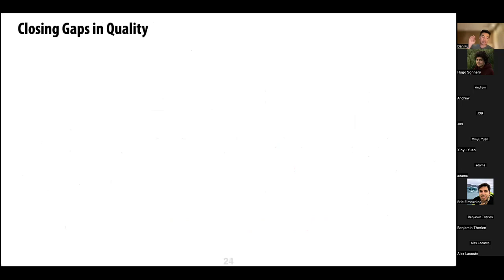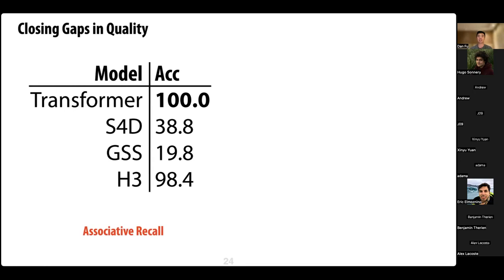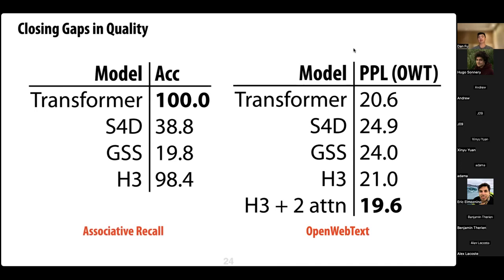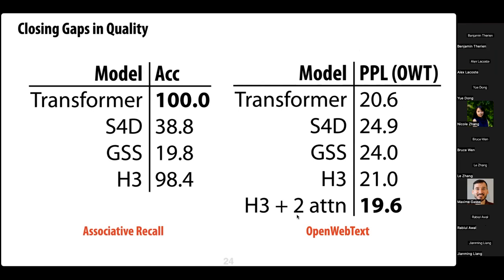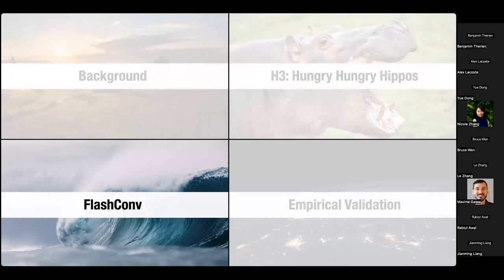We can write out weights that do this, but the key question is whether H3 learns it from scratch. It turns out yes — H3 basically closes the gap with transformers on the associative recall task, nearly matching transformer accuracy. More importantly, when we close the gap on this synthetic task, we can also start closing the gap on real language modeling. Replacing all attention layers with H3 brings us within 0.4 perplexity points of the transformer. Combining H3 with two attention layers — a hybrid SSM-attention architecture — we can actually beat transformers by one perplexity point.